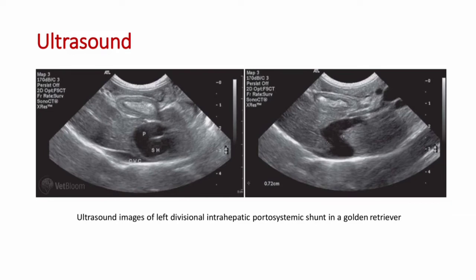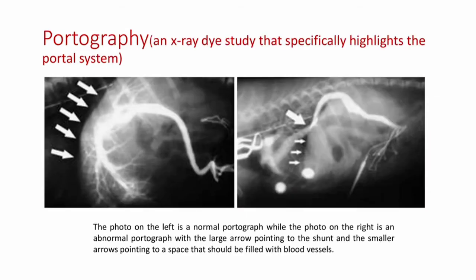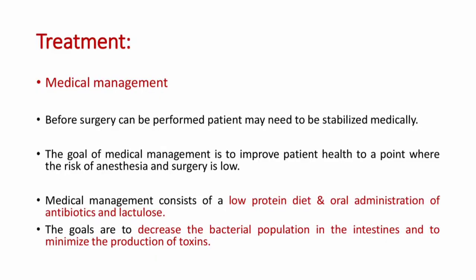This picture shows an ultrasound image of left divisional intrahepatic portosystemic shunt in a golden retriever — you can see the shunt clearly in the ultrasound. Next is the picture of portography, an x-ray dye study that specifically highlights the portal system. The picture on the left is a normal portogram, while the photo on the right is an abnormal portogram with the large arrow pointing to the shunt and the smaller arrows pointing to the space that should be filled with blood vessels like the normal one.